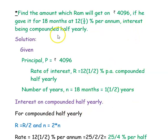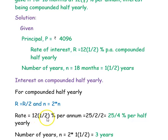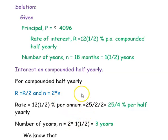For interest compounded half-yearly, we know that the rate of interest will be halved and the number of years will be doubled. The given rate is 12.5% per annum. 12.5 is 25 divided by 2, and dividing by 2 again gives 25 divided by 4% per half-year. The time 1.5 years doubled gives 3 years.